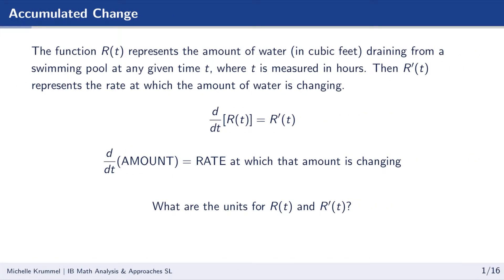In our first example, we have a function r of t that represents the amount of water draining from a swimming pool. The amount of water is measured in cubic feet, and the time t is measured in hours. So r of t is the amount of water, and r prime of t represents the rate at which that amount of water is changing. r prime of t is our rate of change function. When we take the derivative of an amount, we get a rate.